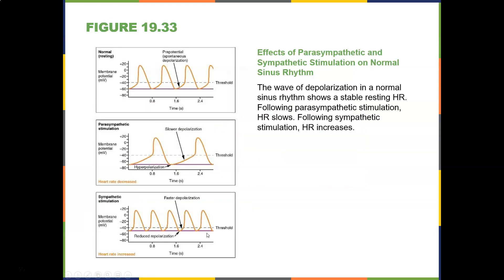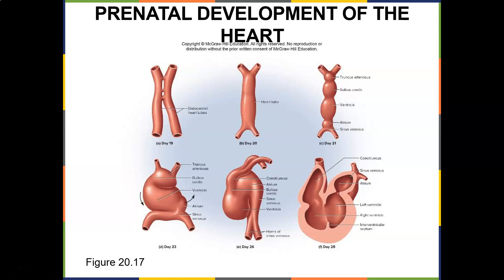Looking at the effects of parasympathetic and sympathetic stimulation on normal sinus rhythm: with parasympathetic stimulation the heart slows down, while sympathetic stimulation causes faster depolarization and slower repolarization, speeding up the heartbeat. This is how your heart rate can speed up or slow down.